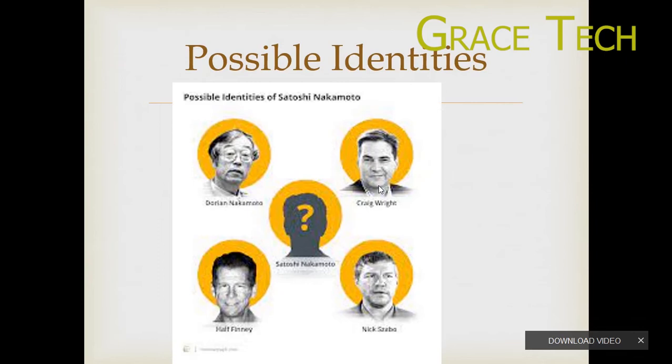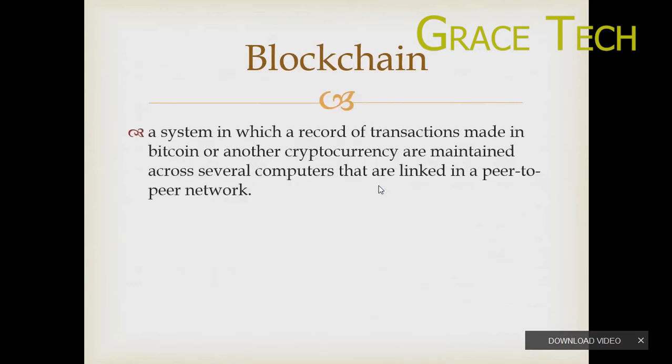Bitcoin is a normal application. Blockchain is a system in which a record of transactions made in Bitcoin or another cryptocurrency is maintained across several computers that are linked in a peer-to-peer network.